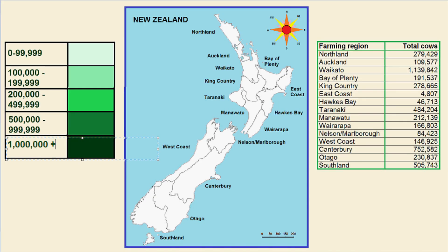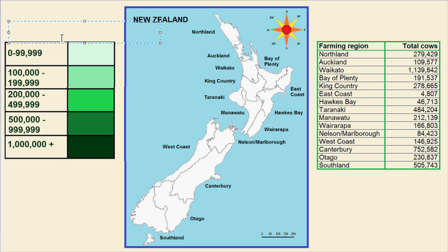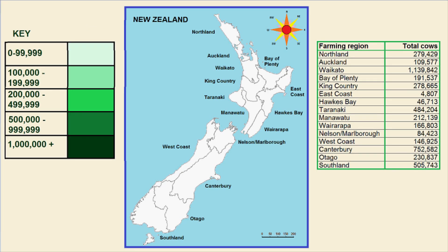Now we are ready to start filling in the different categories. First I'm going to shade in the lightest green for all the regions that have less than 100,000 stock. Those regions include the East Coast, Hawke's Bay, and the Nelson Marlborough region.